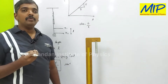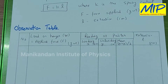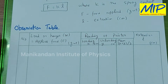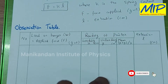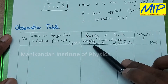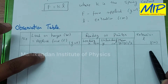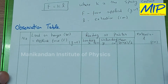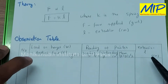Now we have our observation table. The first column is the loading on the hanger w, which equals the applied force f in gram weight. Then we have the pointer reading while loading the mass and while unloading the mass. The third column is the average of these two readings, (x + y) / 2, giving the mean extension value l in centimeters. We will plot a graph between applied force versus this length and take the slope to find the spring constant using Hooke's Law.